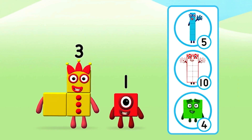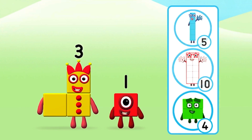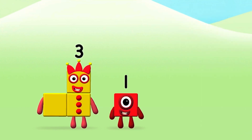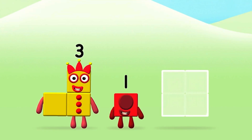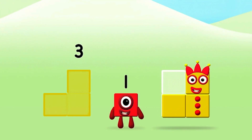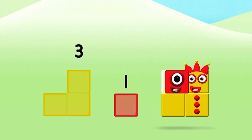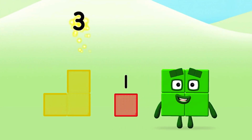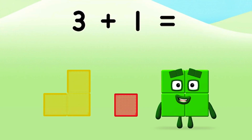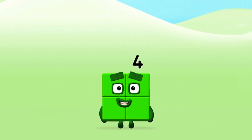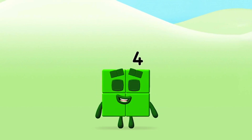Do you know which number block you'll make when you add these two number blocks together? Well done! You were right! Add the number blocks together! 3 plus 1 equals 4. Well done! You made number block 4!